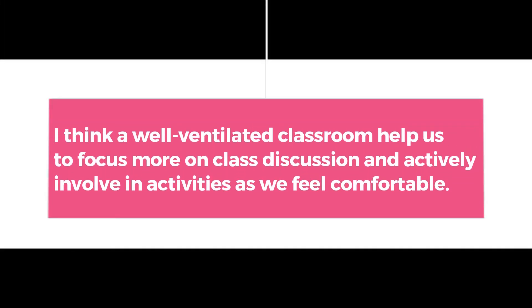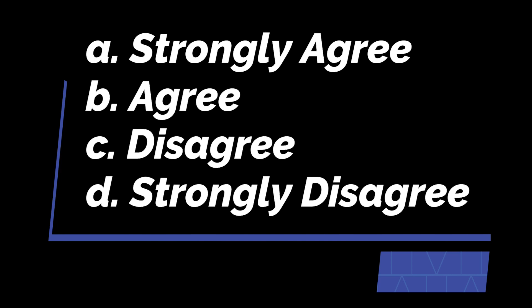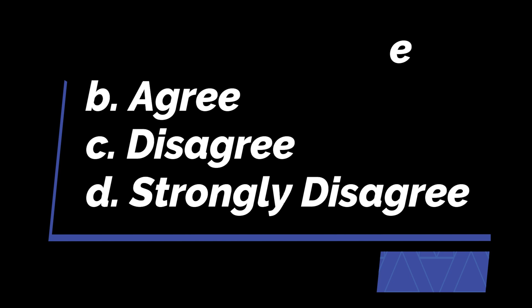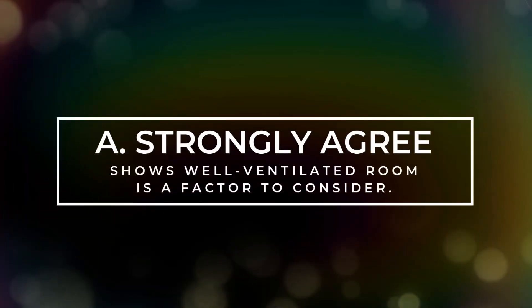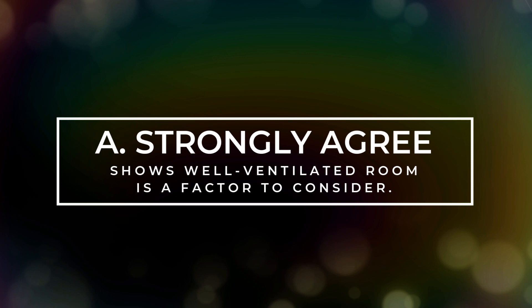We may say that students may think that when the classroom is well-ventilated, they tend to focus more on classroom activities. Here's a statement with categorical variable classifications: 'I think a well-ventilated classroom will help us to focus more on class discussion and actively involve in activities as we feel comfortable.' A. Strongly agree. B. Agree. C. Disagree. Or D. Strongly disagree. These are what we call categorical classifications. From the statement, 'which you think' refers to students' perception from the research title, and 'feel' taps on the students' responsive awareness and emotion — these are both categorical variables that cannot be counted. If most of your respondents answered A, then you may interpret that a well-ventilated classroom is a great factor, leading to ensure outstanding performance of the students.